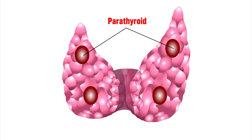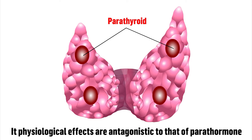Let us know about calcitonin. It is a calcium-lowering hormone secreted by the parafollicular cells of the parathyroid gland. It is a protein. Its physiological effects are antagonistic to that of parathormone.